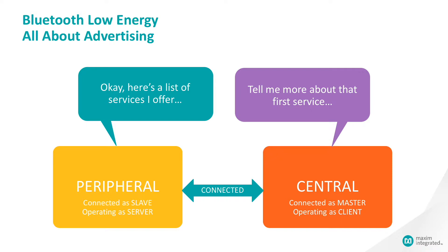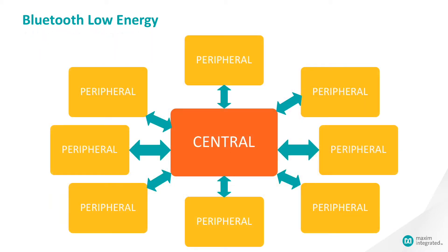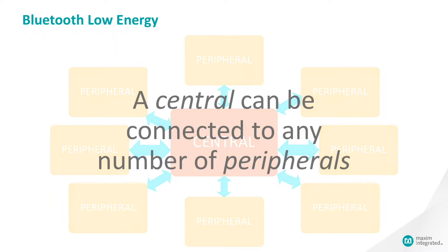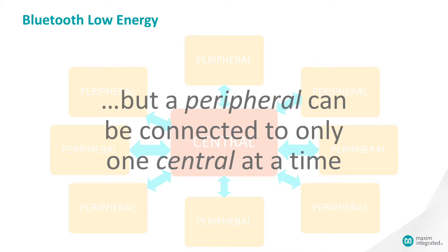Notice something here: in this relationship, the central is in control — it's the master, and the peripheral is considered a slave. But in terms of the operating mode, the peripheral is a server responding to queries and commands from the central, and the central is operating as a client. A central can connect to and manage many peripherals, but any given peripheral can only be connected to one central at a time. Also, peripherals don't connect to each other — they only connect to centrals.